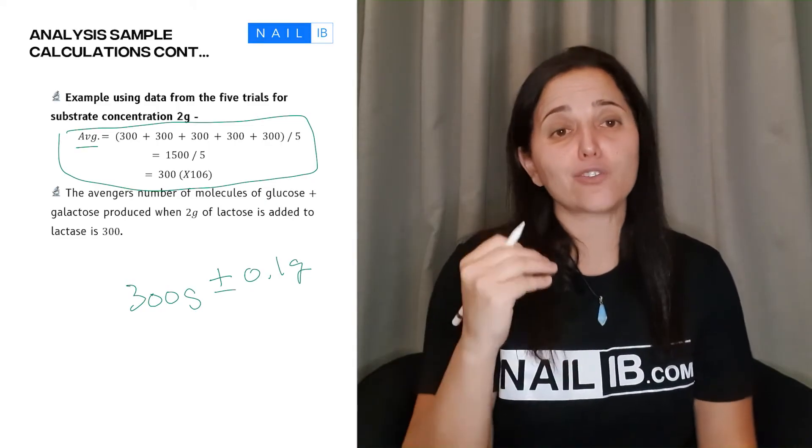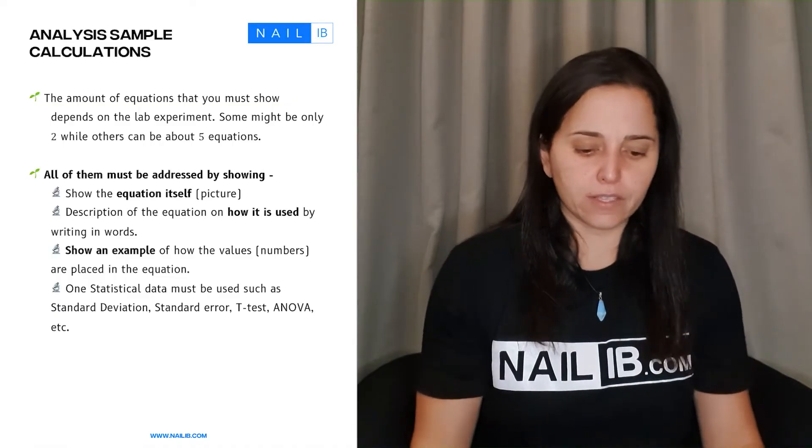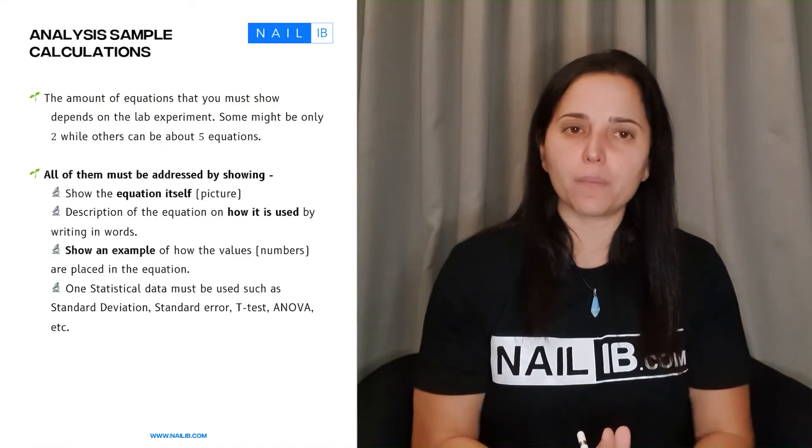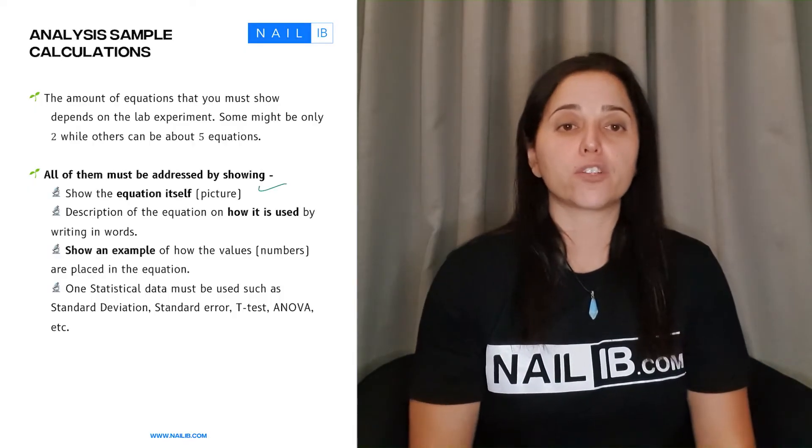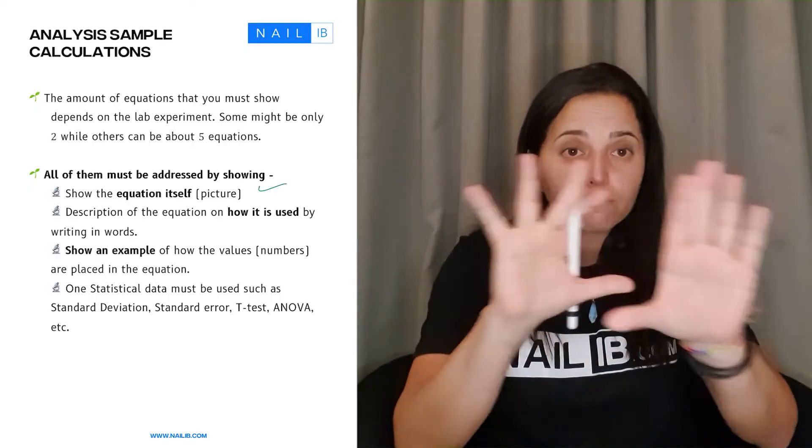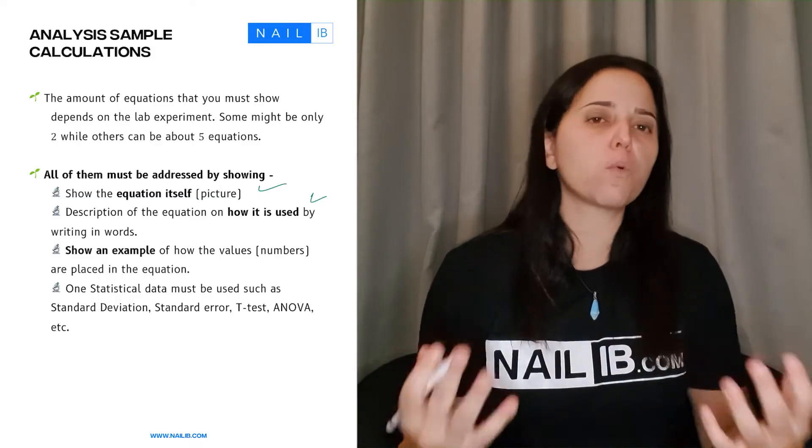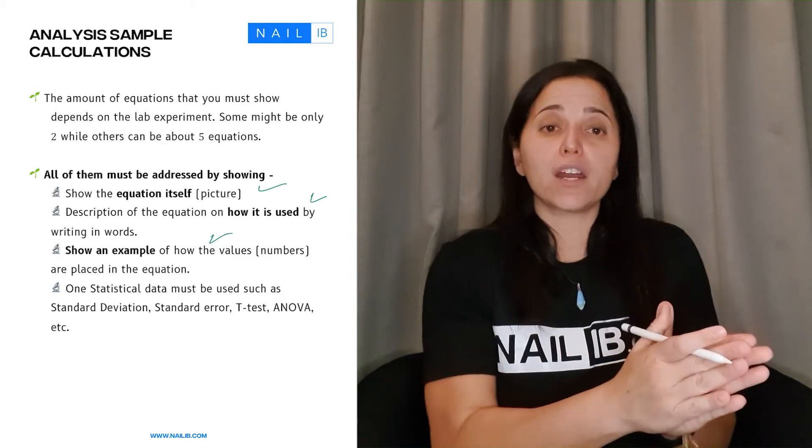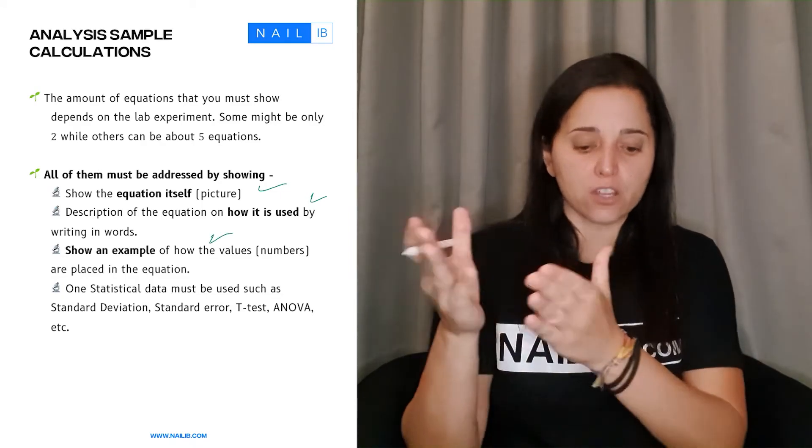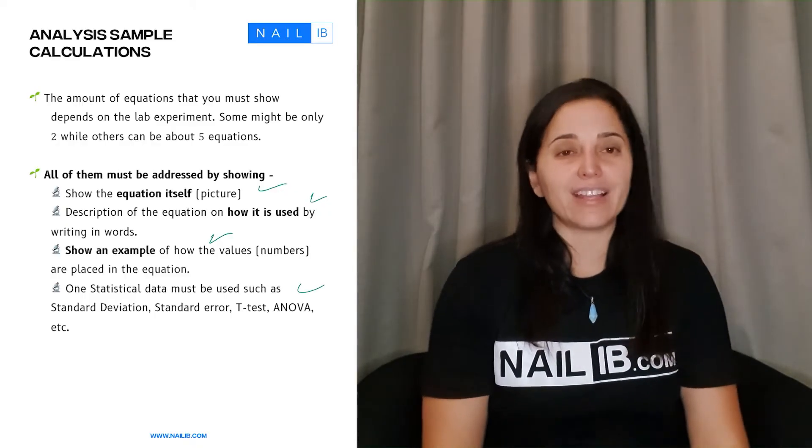Here is another thing that I'm going to explain to you: what are the steps to do this thing. So the first thing is show the equation itself, like nothing, just plug it in there. Then by using words describe why you're using this calculation. Then take one of your raw data and place it into the equation and show the results.